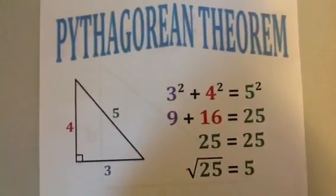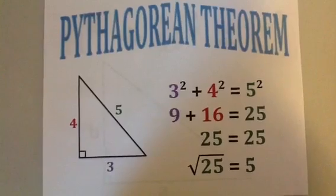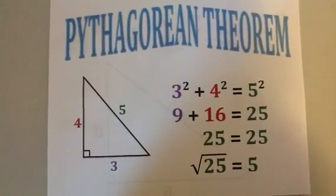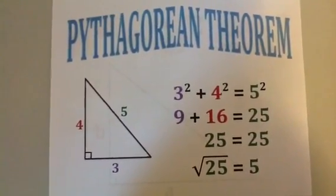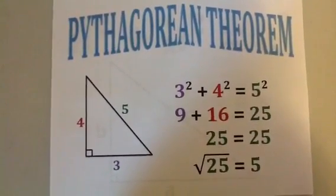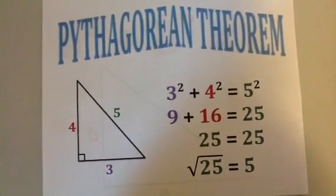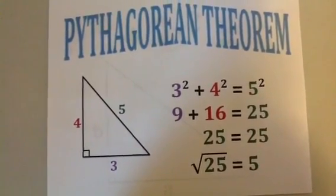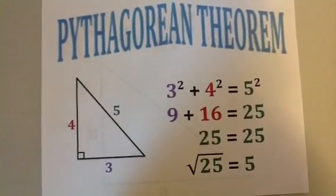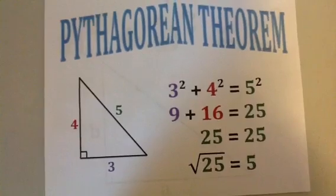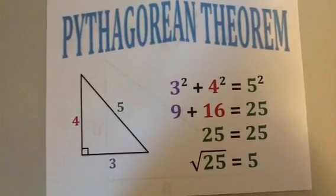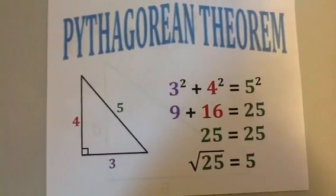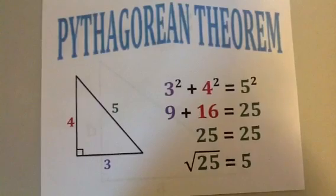We're learning something new, and it's called the Pythagorean Theorem. It's not too hard to figure out, and not too hard to understand. We use it with right triangles, and right triangles only. We can use it to help us find the length of a missing side.